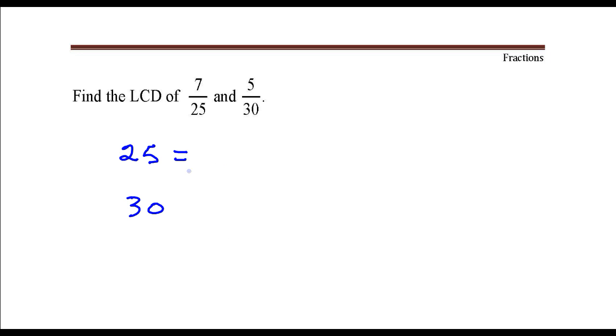I'm going to write the prime factorization of 25, that's 5 times 5, and I'm going to write the prime factorization of 30, that's 2 times 3 times 5.